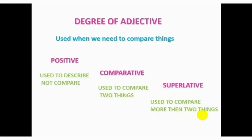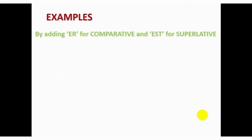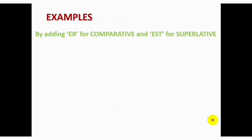We see that tall is a positive, taller is a comparative and tallest is a superlative degree. You have to remember that positive can be converted to comparative and superlative. By adding ER for comparative and EST for superlative, you can convert positive degrees.